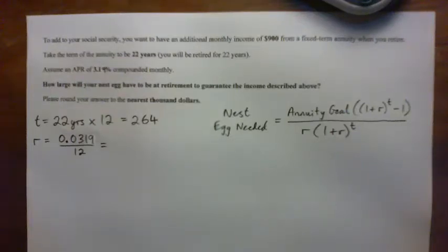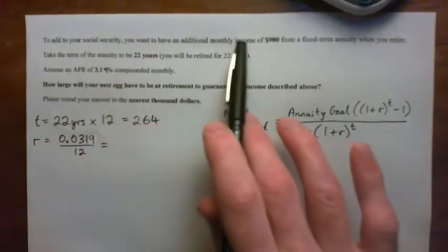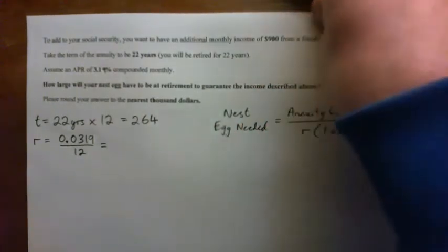Hi everybody, I'm just going to go over this quiz question with you. To add to your Social Security you want to have an additional monthly income of $900 per month from a fixed term annuity when you retire.